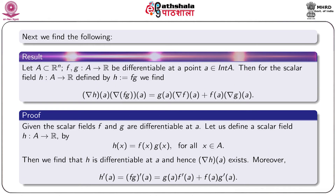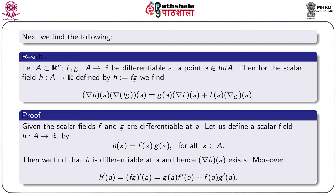Next, we find the Leibniz rule for gradient. Let A be a subset of Rⁿ, and f and g two scalar fields defined on A which are differentiable at an interior point a. Then grad(fg)(a) = g(a) · grad f(a) + f(a) · grad g(a). Note that on the right-hand side, grad f(a) is a member of Rⁿ and g(a) is a scalar, so g(a) · grad f(a) is a scalar multiple of the vector grad f(a), hence a member of Rⁿ. Similarly for the next term. So we are adding two vectors of Rⁿ.